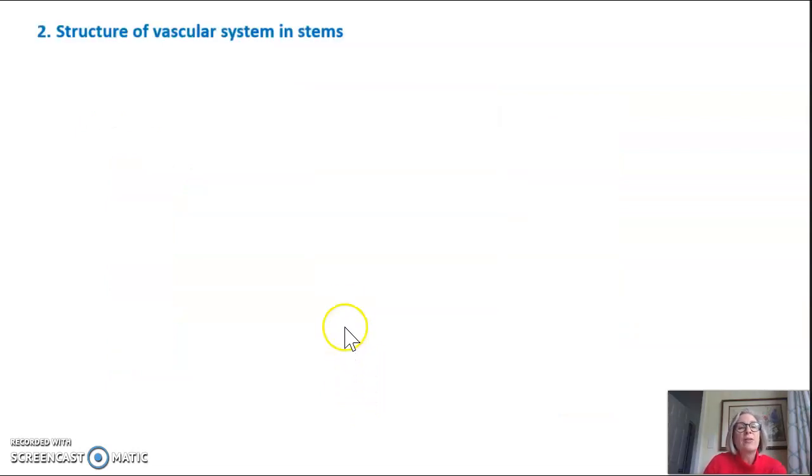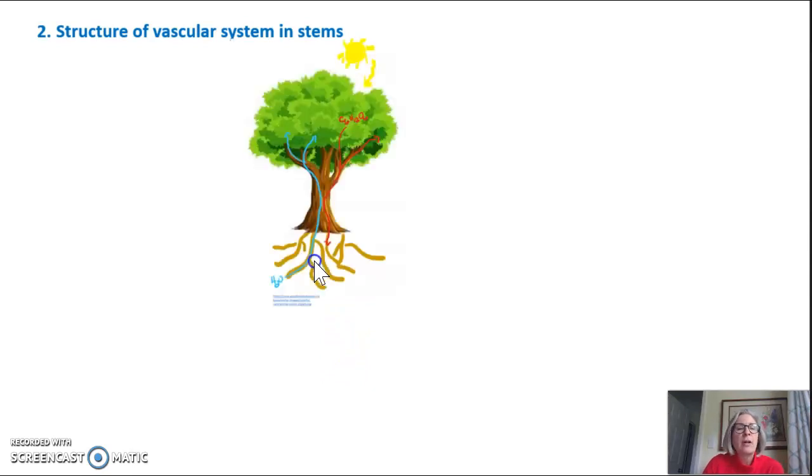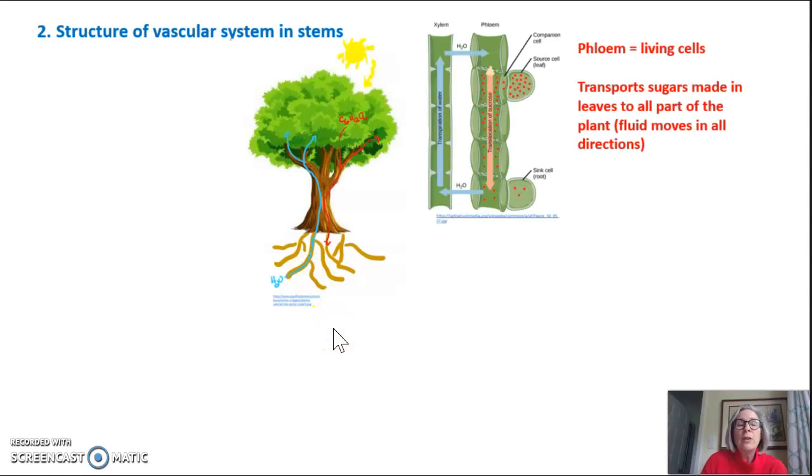The structure of the vascular system in the stems and leaves also differs between monocots and dicots. So if we look at the vascular system of a plant, remember you have water being transported in the xylem and sugars being transported in the phloem. If we look more up close at what the structures of these two transport systems look like, the phloem is composed of living cells and it transports sugars made in the leaves to all parts of the plant and the fluid moves in both directions, both up and down.